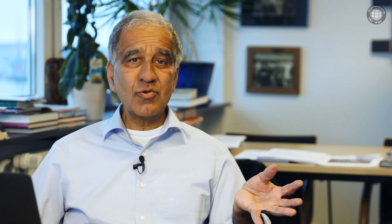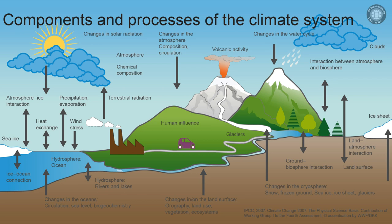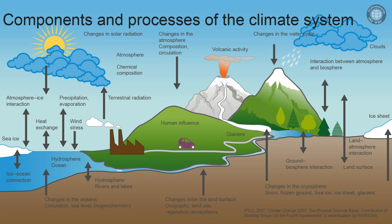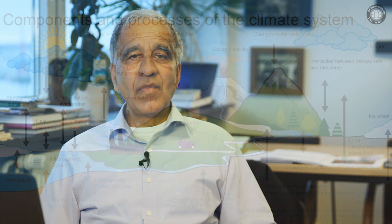When talking about the climate, we generally speak about the state of a whole system — and this is the climate system. We usually perceive climate change through the atmosphere, for example through changes in air temperature or precipitation. However, they do not necessarily originate from the atmosphere but rather from other components of the climate system. These components are the atmosphere, the oceans, the biosphere, and the land. All these components combined constitute the climate system, and when we talk about climate, we mean the state of the whole system.